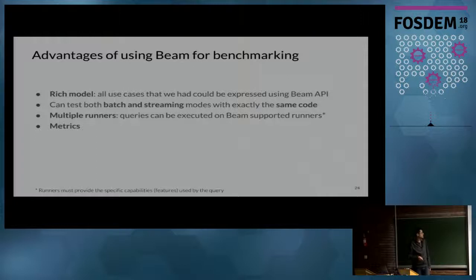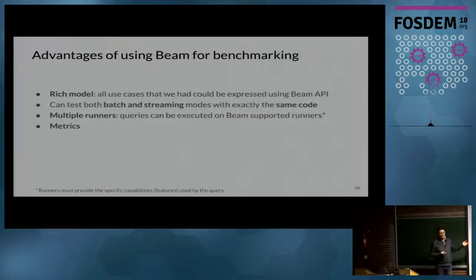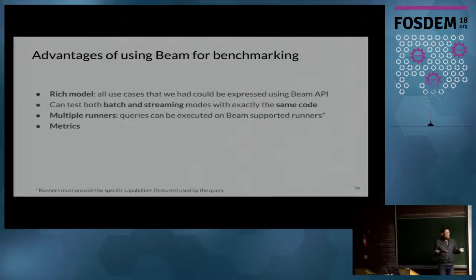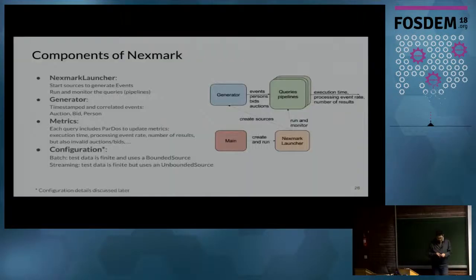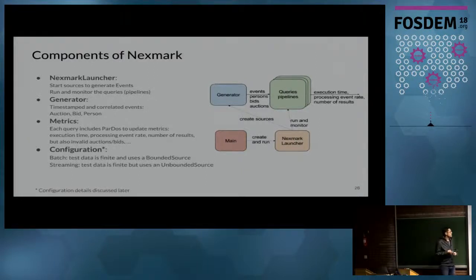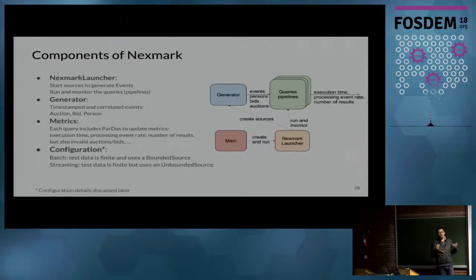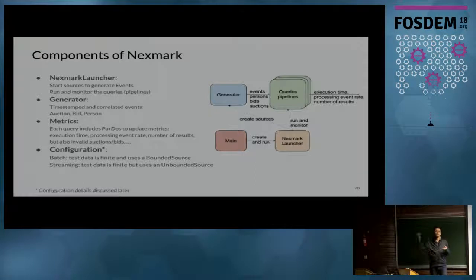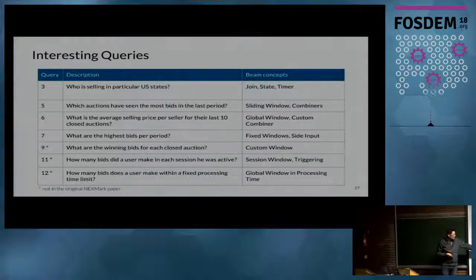Now it's part of Beam master. The advantage of using Beam for benchmarking is that we cover the issues we discussed before. We have a rich semantic model, one codebase that runs on every system, and we benefit from all the metrics APIs Beam includes. The implementation has four main boxes: a launcher that executes one benchmark configuration, a generator that creates events, a metrics component, and the benchmark configuration.